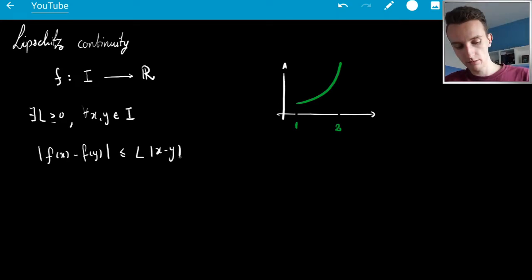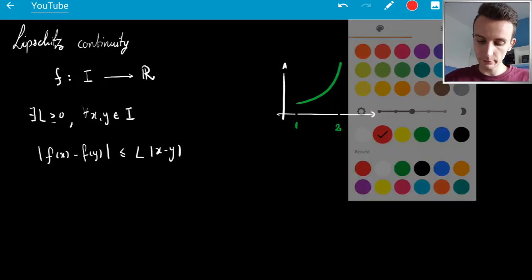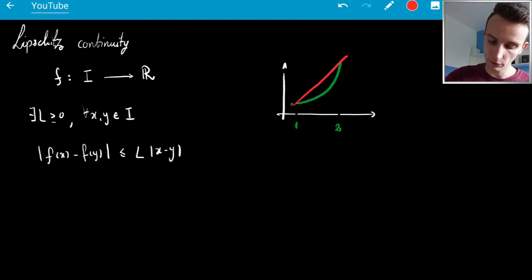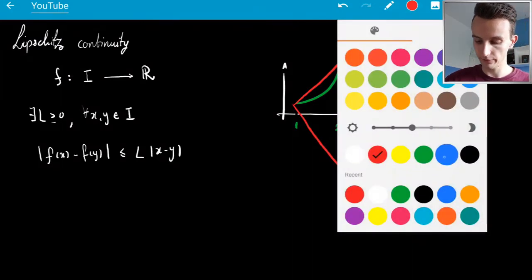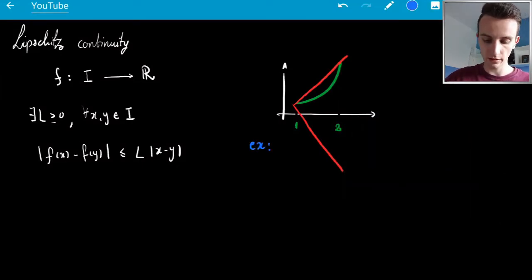and we call L the Lipschitz constant. And so what it would basically be on this example is I'm saying that I can put the whole function into a cone of slope L, so that would look like this, right, and maybe let's even write this example,